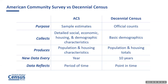This summary chart provides the differences between the ACS and the decennial census. The ACS estimates are based on a sample of the population — over 3.5 million housing unit addresses each year — whereas the decennial census is based on the official count of the entire population. The ACS collects detailed social, economic, housing, and demographic characteristics, whereas the decennial census collects basic demographics via the short form: age, sex, race, Hispanic origin, household relationship, and housing tenure. The ACS produces population and housing characteristics; the census produces population and housing totals. The ACS occurs annually while the decennial census happens every 10 years, reflecting a point in time — census day, typically April 1st.